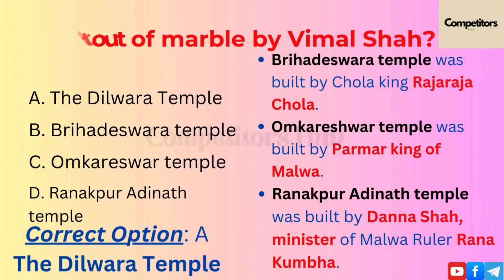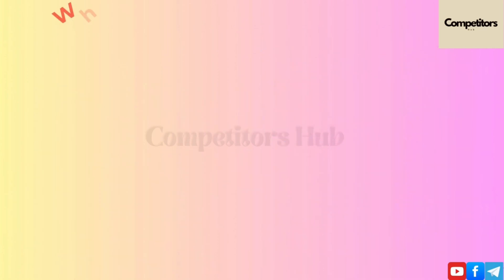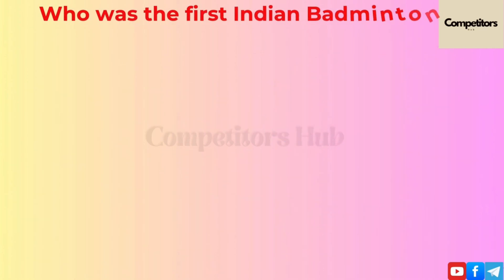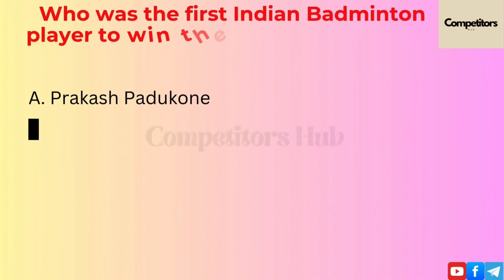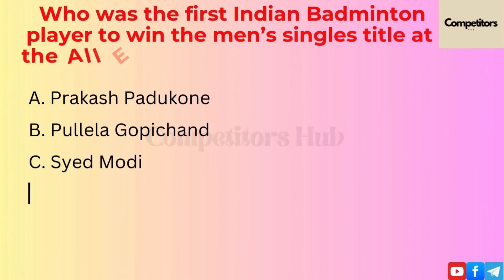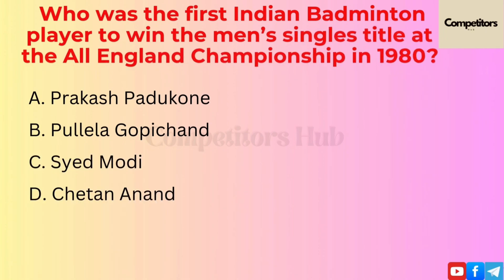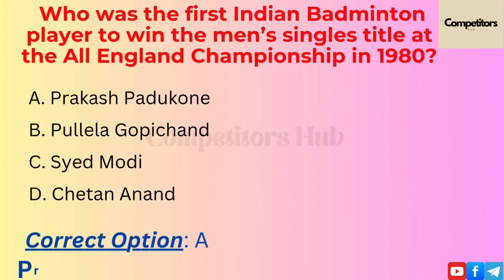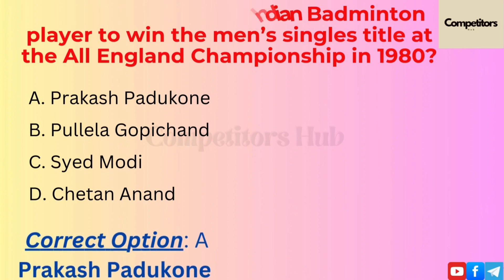The next question is: who was the first Indian badminton player to win the men's singles title at the All England Championship in 1980? Option A: Prakash Padukone. Option B: Pullela Gopichand. Option C: Syed Modi. Option D: Chetan Anand. The correct option is A, Prakash Padukone.